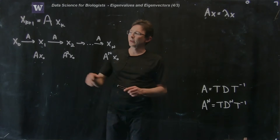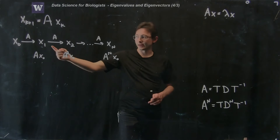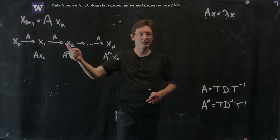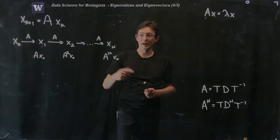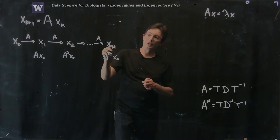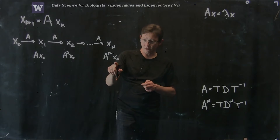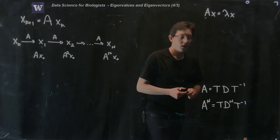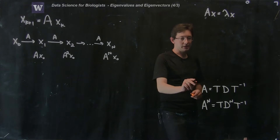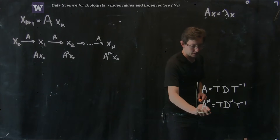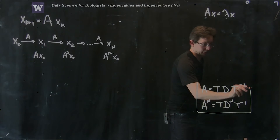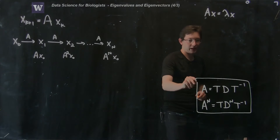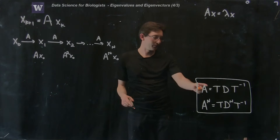Every time you step forward you multiply by the matrix A. So x at time step n is given by matrix A to the power n times x0. We're going to use the useful identities we derived last time from the eigenvalues and eigenvectors.